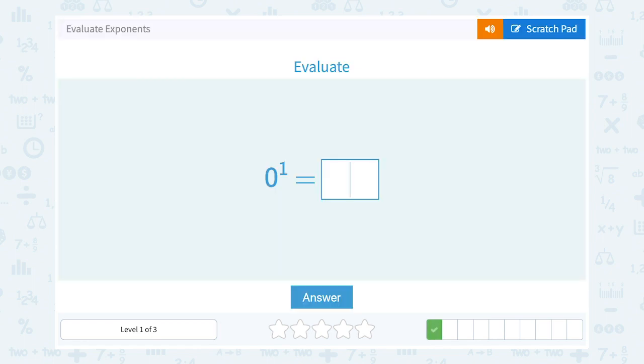Here we have zero to the first power. Well, our base is zero and our exponent is one. So that means we're multiplying zero out one time. Well, that would just be zero.